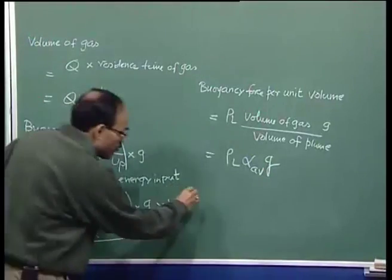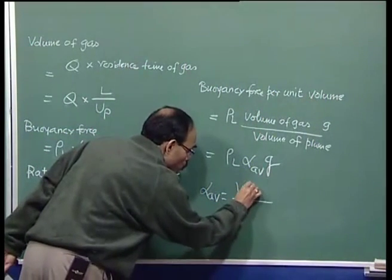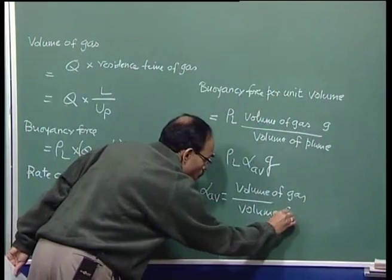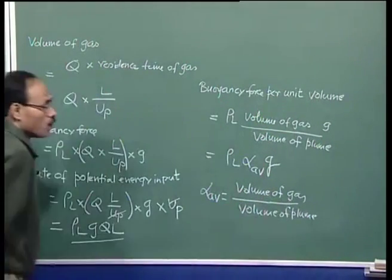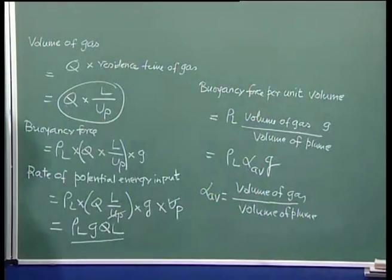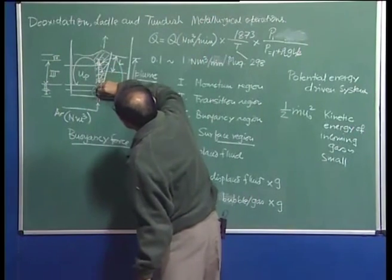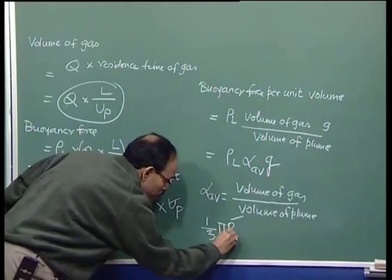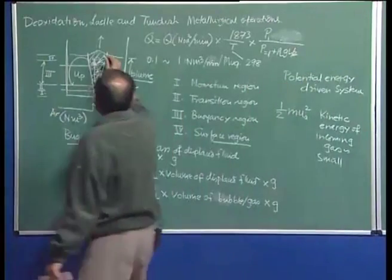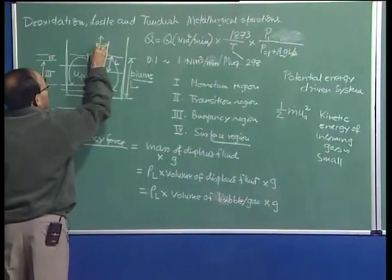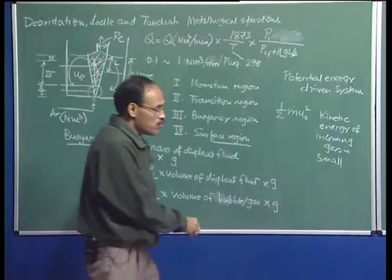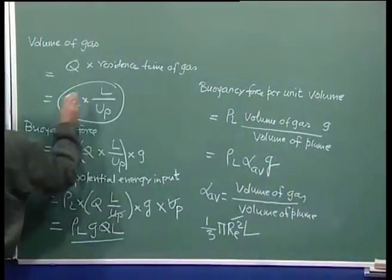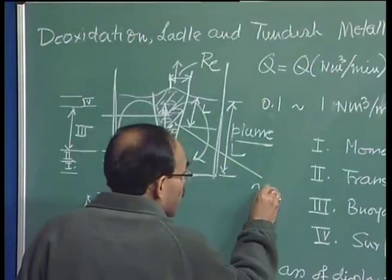The mean gas volume fraction alpha-average equals volume of gas divided by volume of plume. Assuming the plume is roughly conical in shape, the volume of plume is one-third pi r-e-squared times L, where r-e is the radius of the plume at the surface. Using the expression for volume of gas and substituting, one finds that the average gas volume fraction is barely 5 percent.